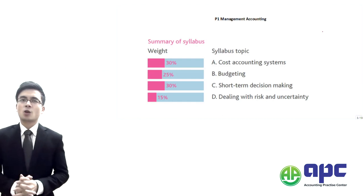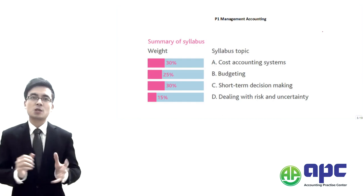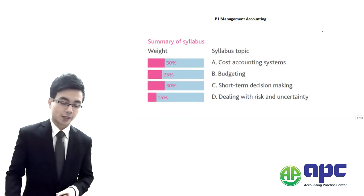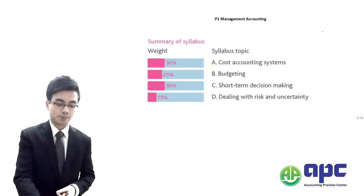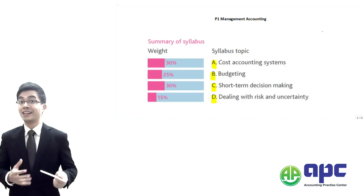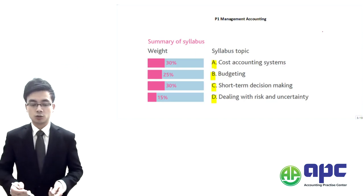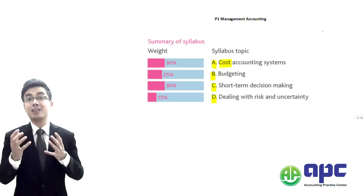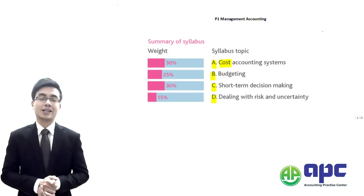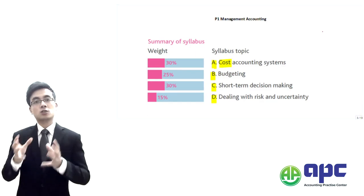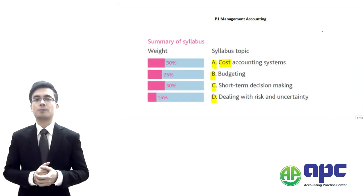The CIMA P1 is going to test you on four aspects, which you can divide into four chapters. The first chapter is related to costs — we're going to talk about quite a lot of ways to allocate the costs to each of these products in turn.